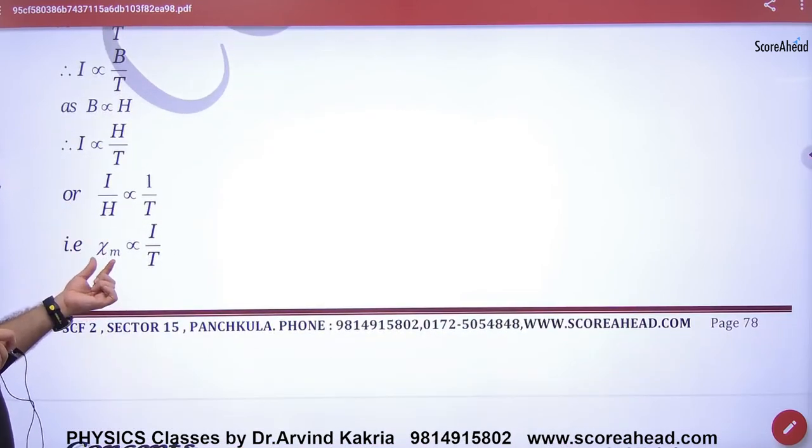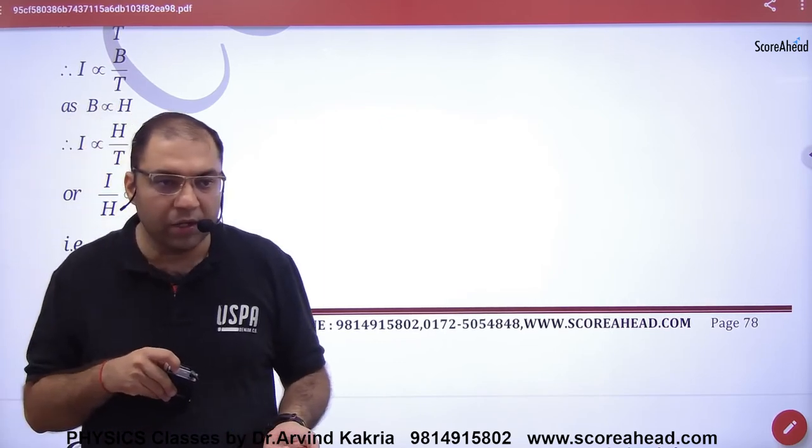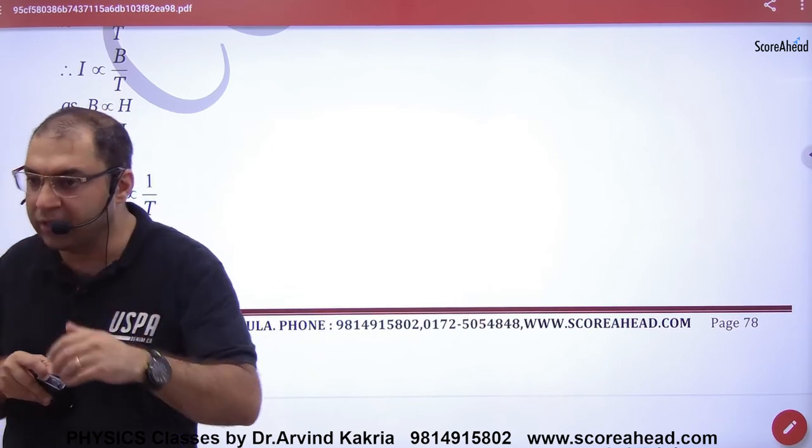Chi. Susceptibility. So Chi is inversely proportional to temperature. Chi also tells us that the substance is magnetized, or the nature of it.